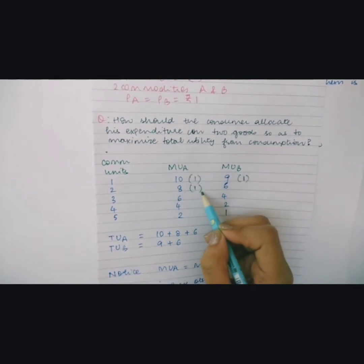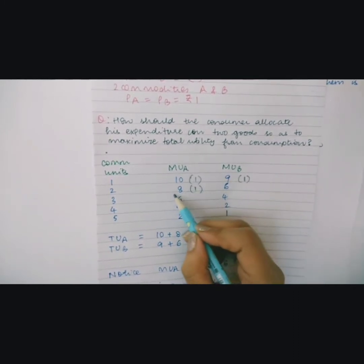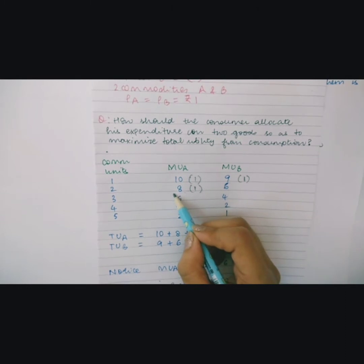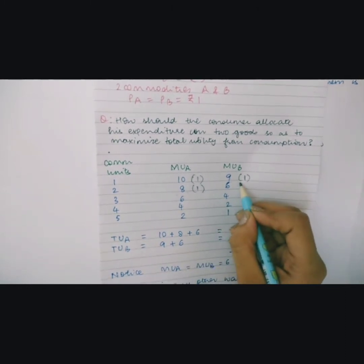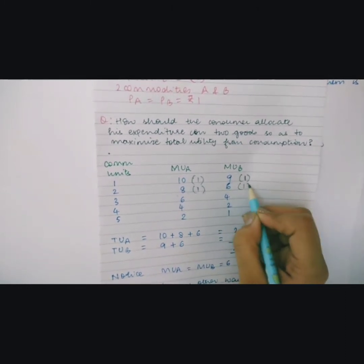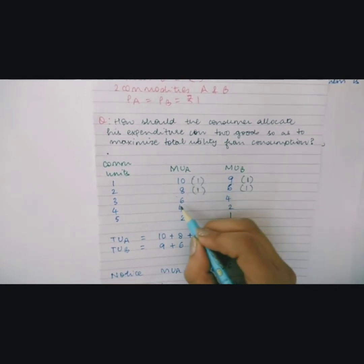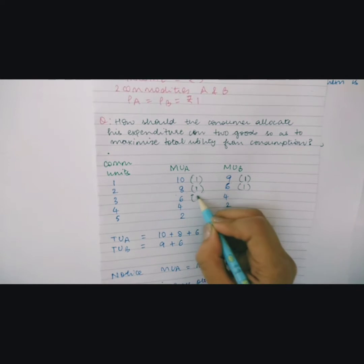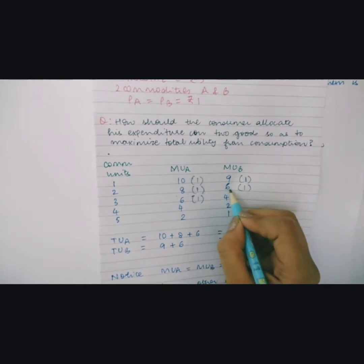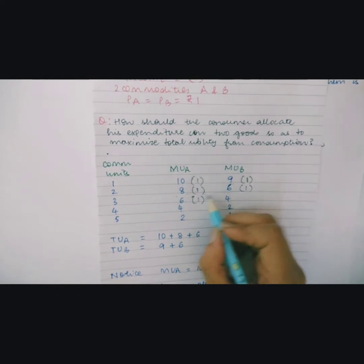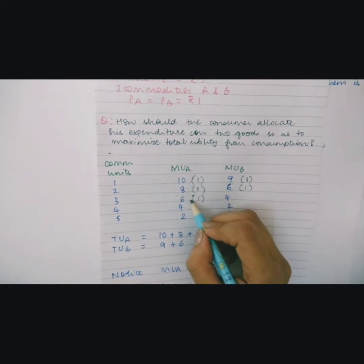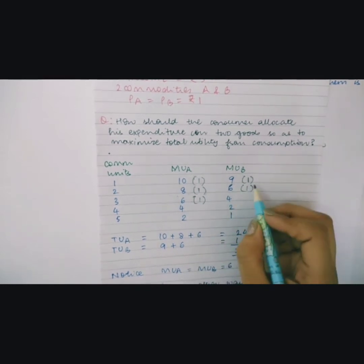You consume the second unit of commodity A and derive a marginal utility of 8. Similarly, you now see that the marginal utility from the second unit of commodity B is equal to the marginal utility from the third unit of commodity A — both are 6.